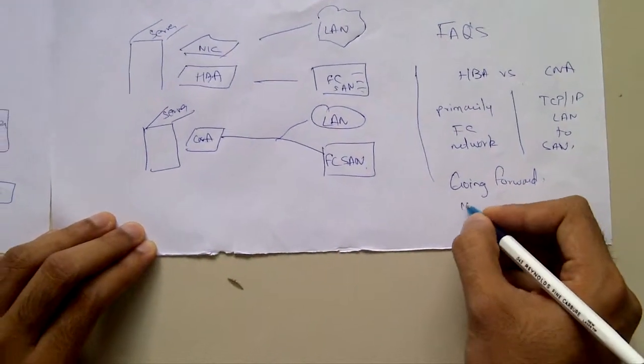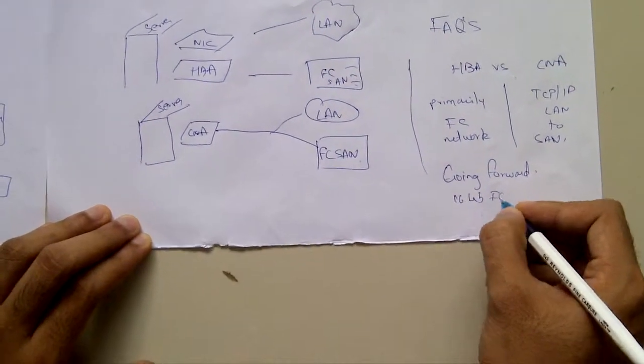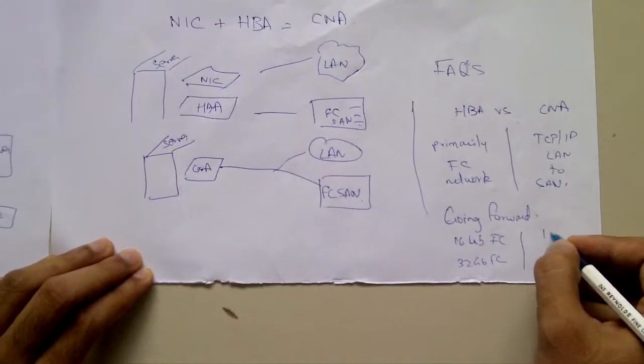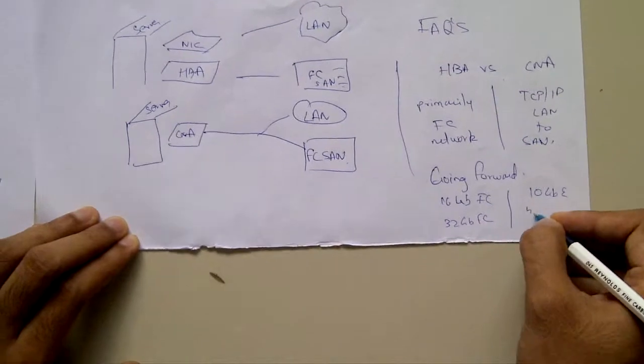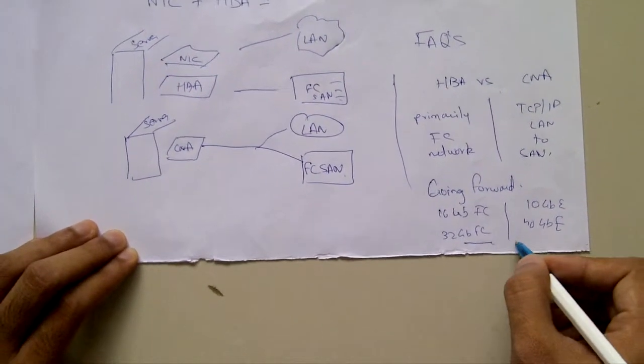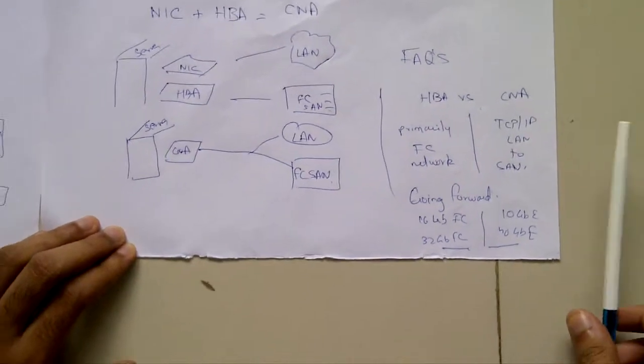Going forward, HBA has 16 gig and 32 gig fiber channel technologies coming up while the CNA has 10 gigabit Ethernet and 40 gigabit Ethernet technologies coming up. It will be interesting to see which of these technologies gain traction among customers.